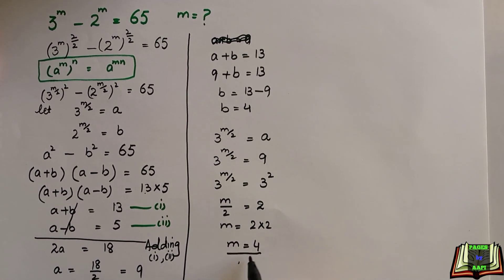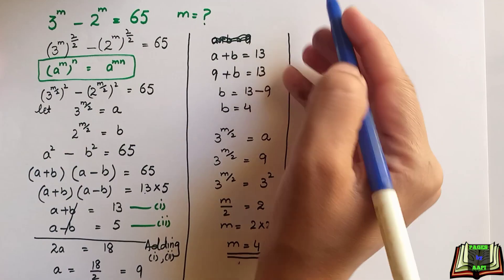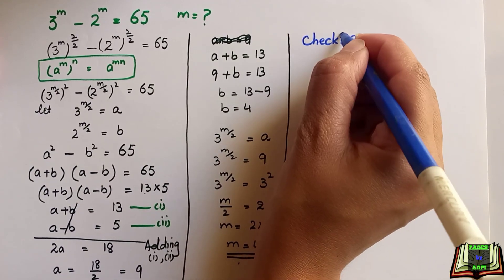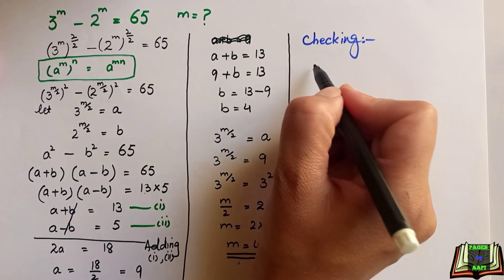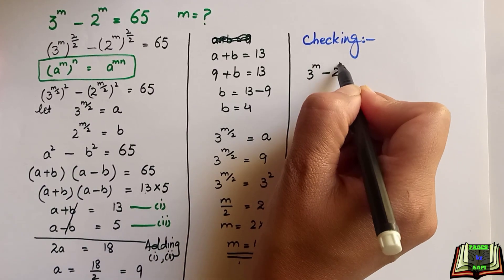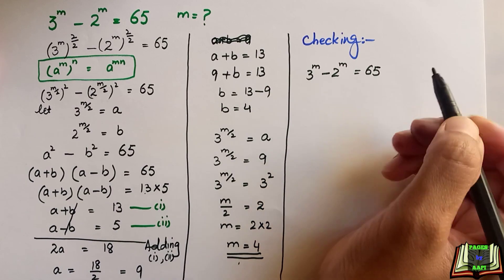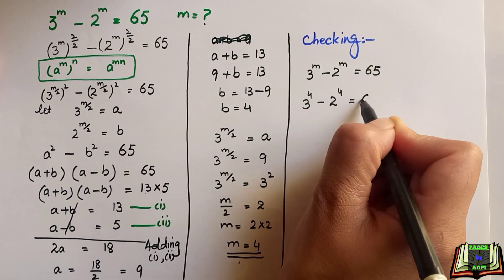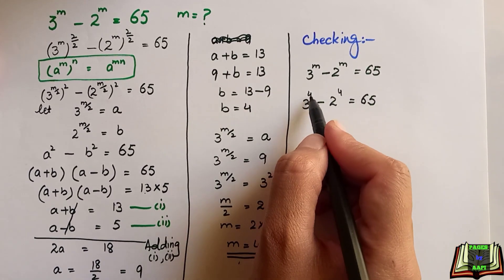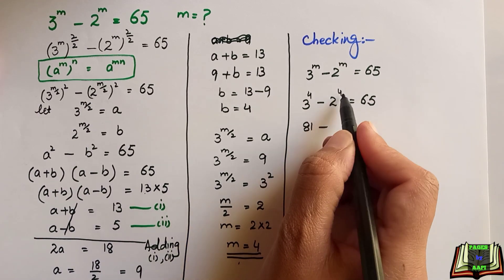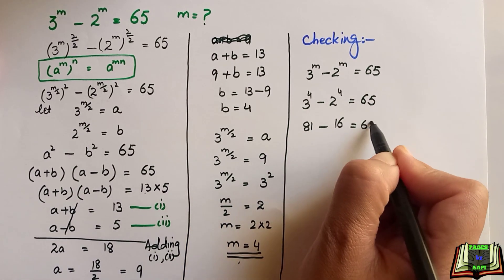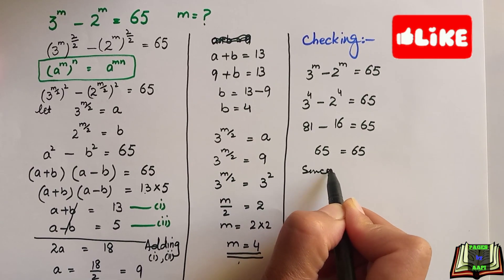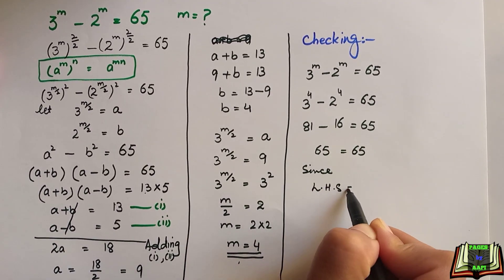This is the answer, but let's verify it. Substituting m equals 4 into the original equation: 3 to the power 4 minus 2 to the power 4 equals 65. We get 81 minus 16 equals 65. Since left-hand side equals right-hand side, the value m equals 4 is confirmed correct.